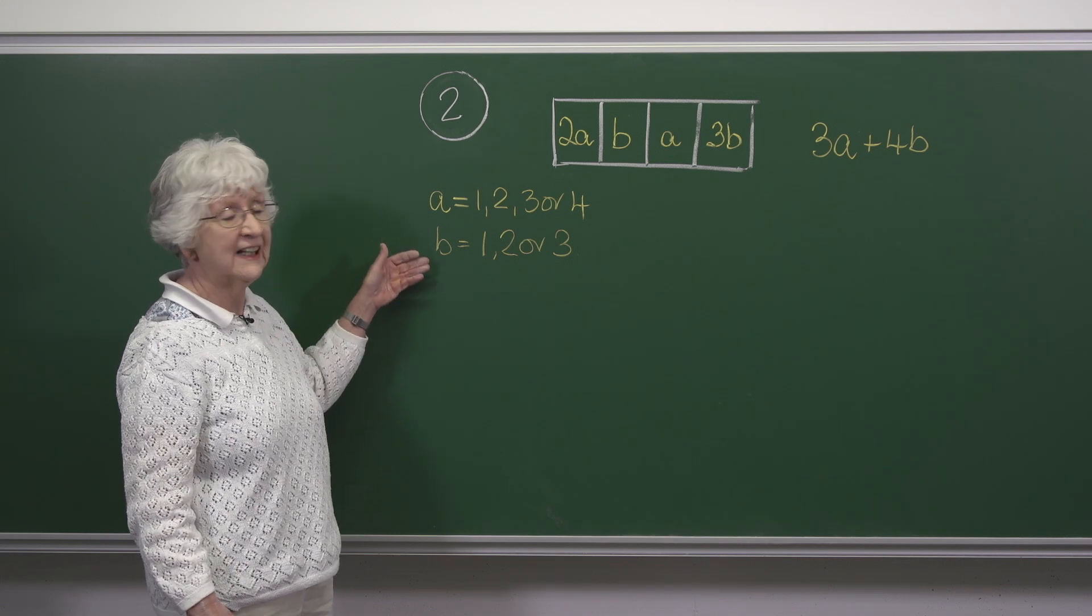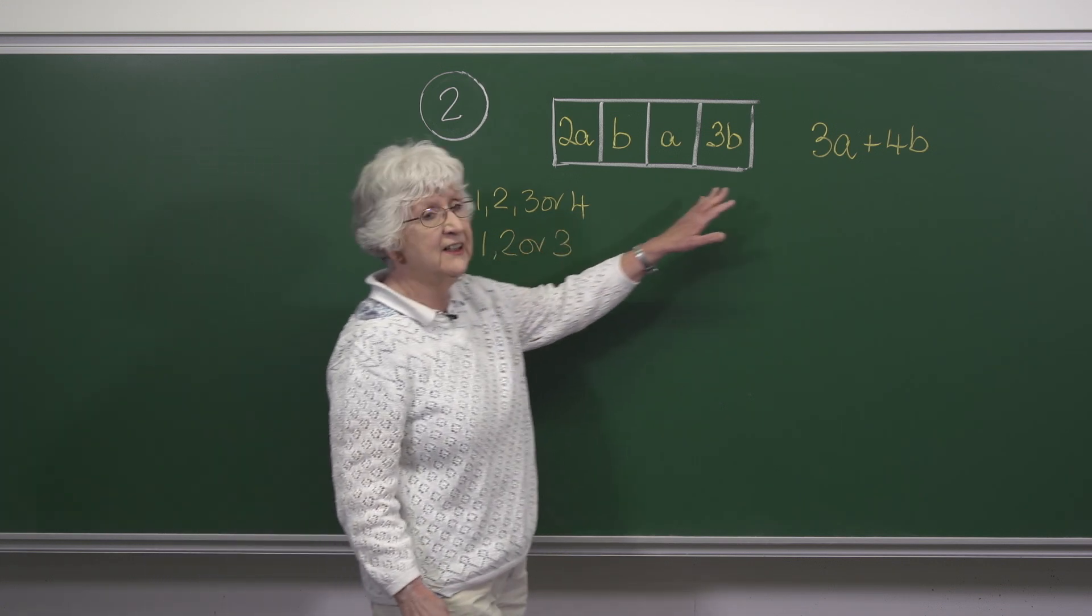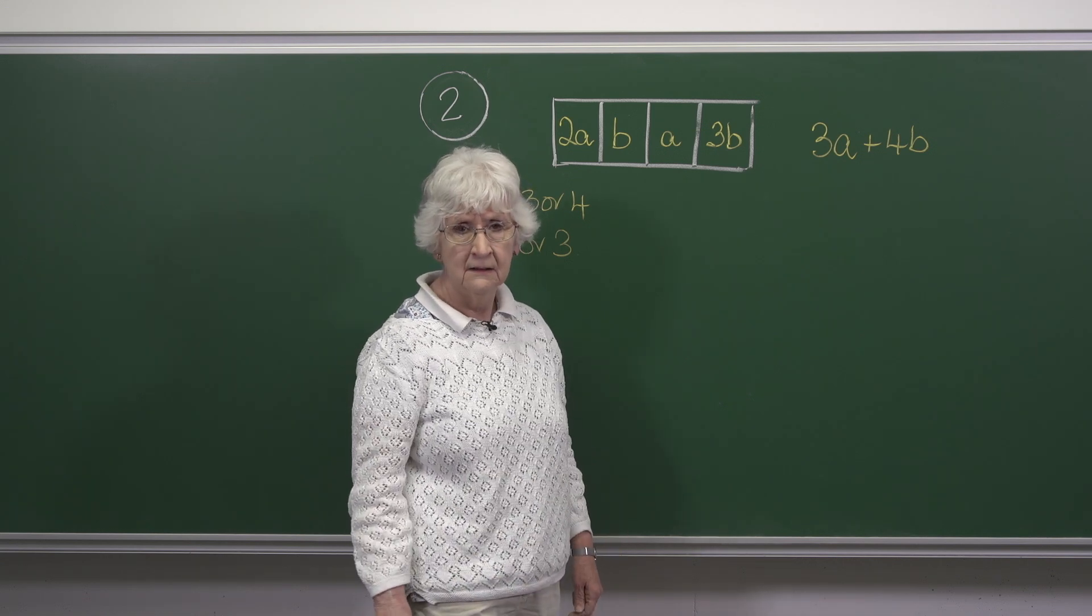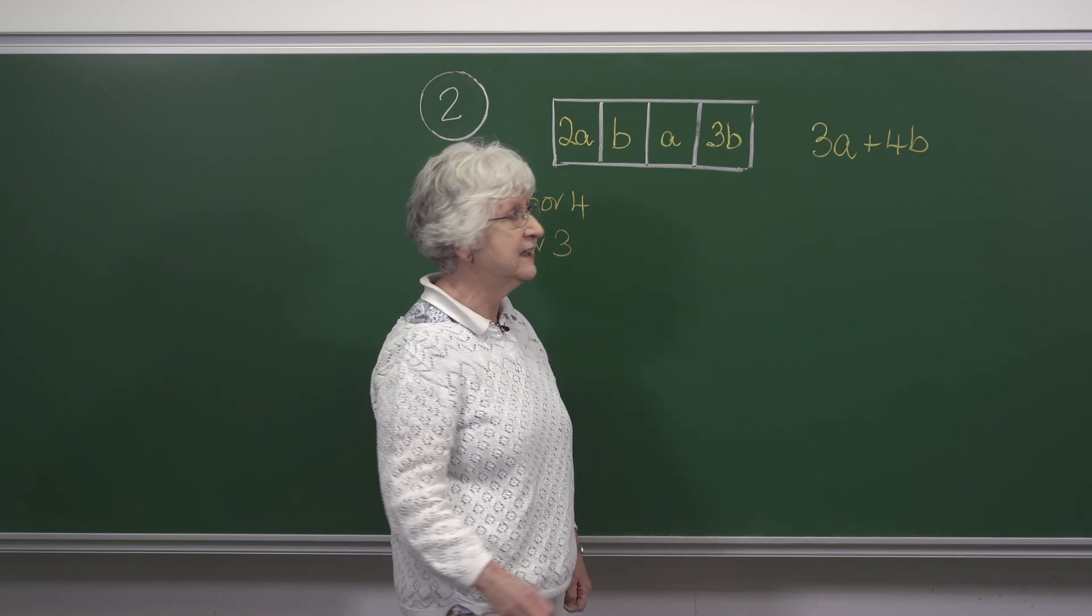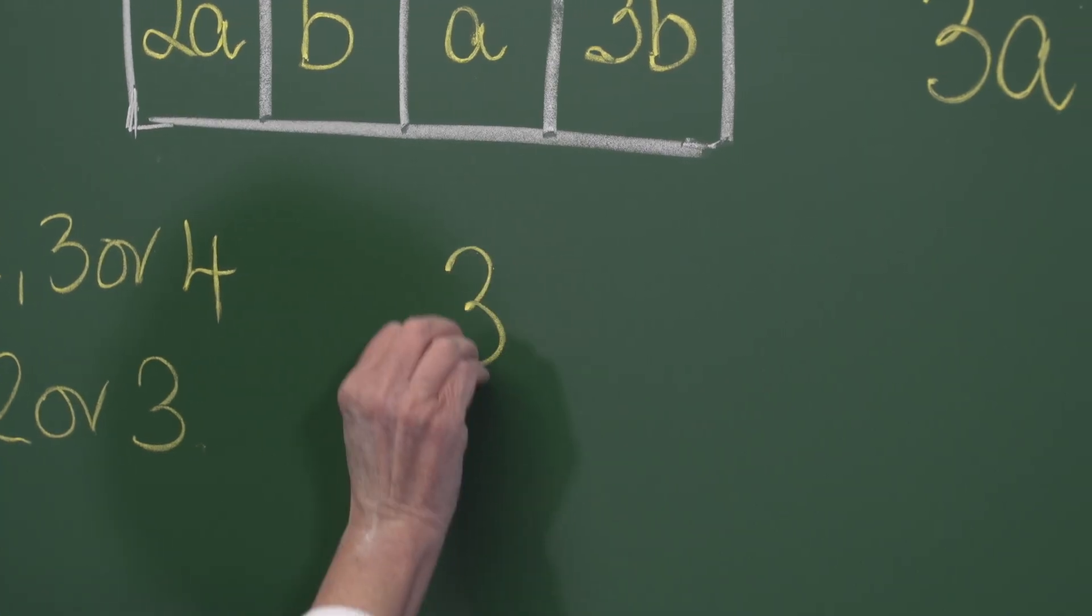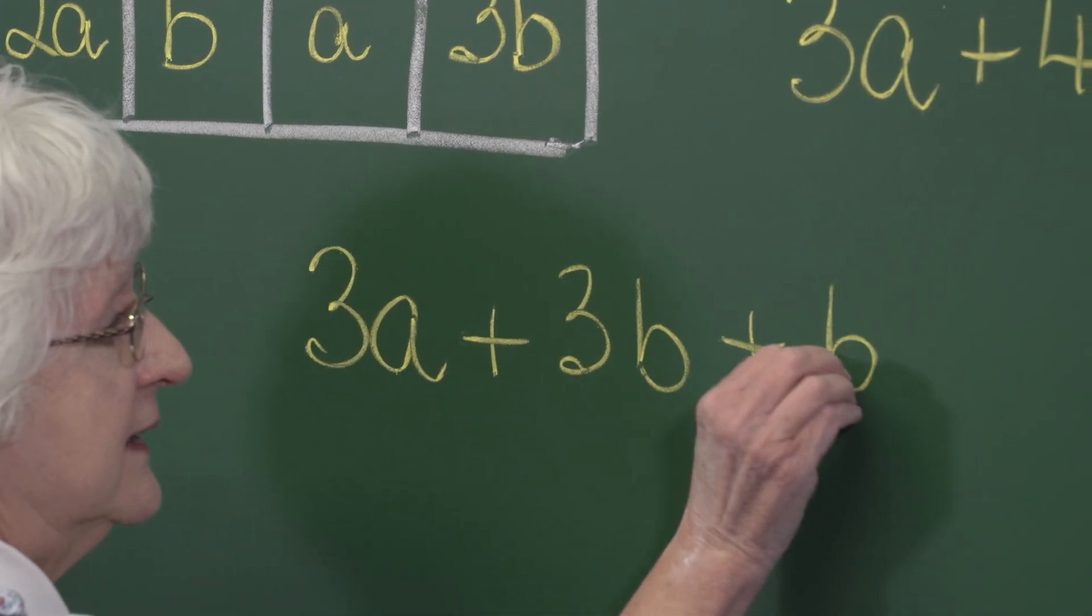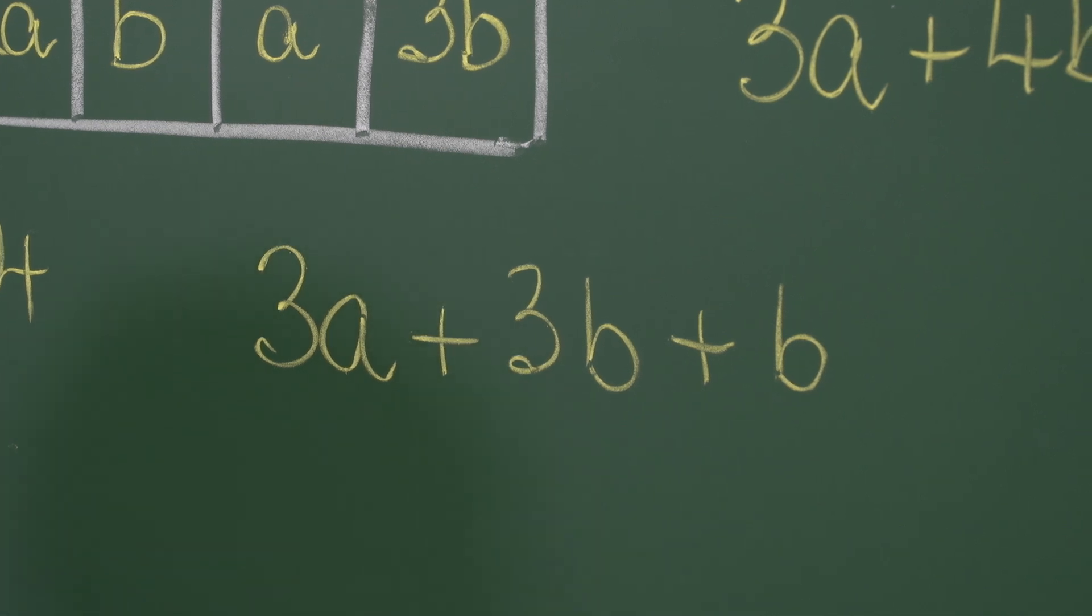So now we have constraints on a and b and 3a plus 4b is a multiple of 9 and so it's a multiple of 3. So that means that 3a plus 3b plus one more b is a multiple of 3.